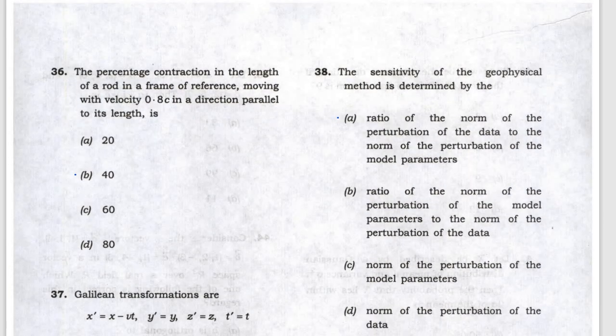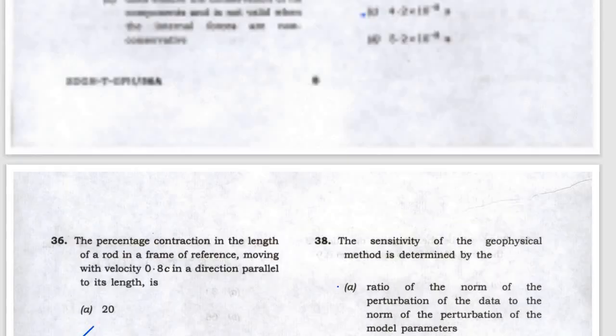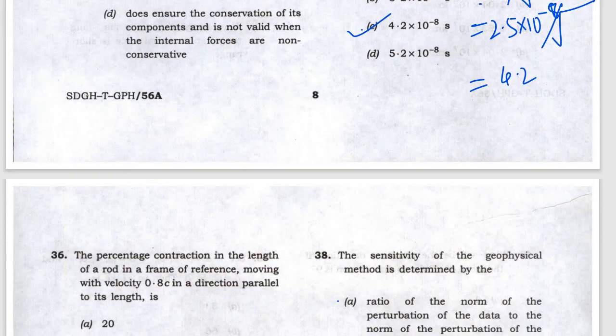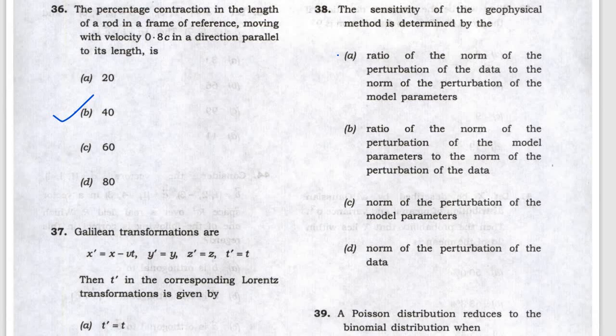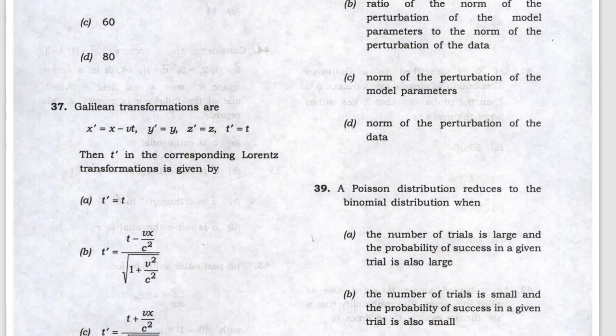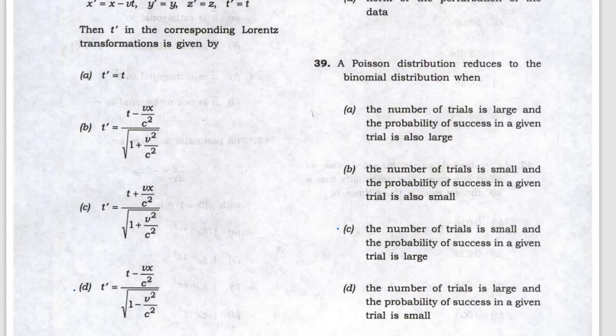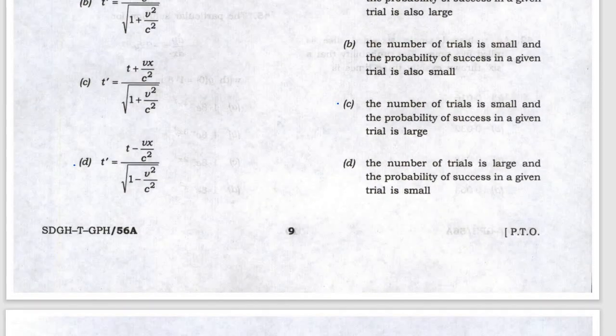Next, what is the percentage of length contraction — this will be 40%. They are asking about both time dilation and length contraction. Next, the Galilean transformation — D will be the answer.